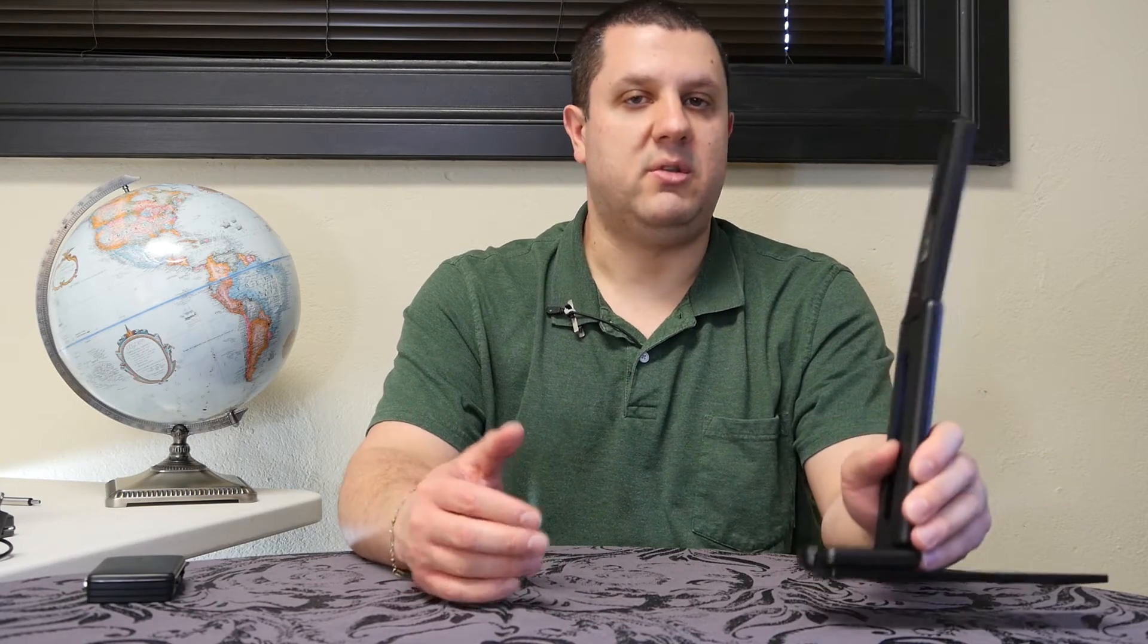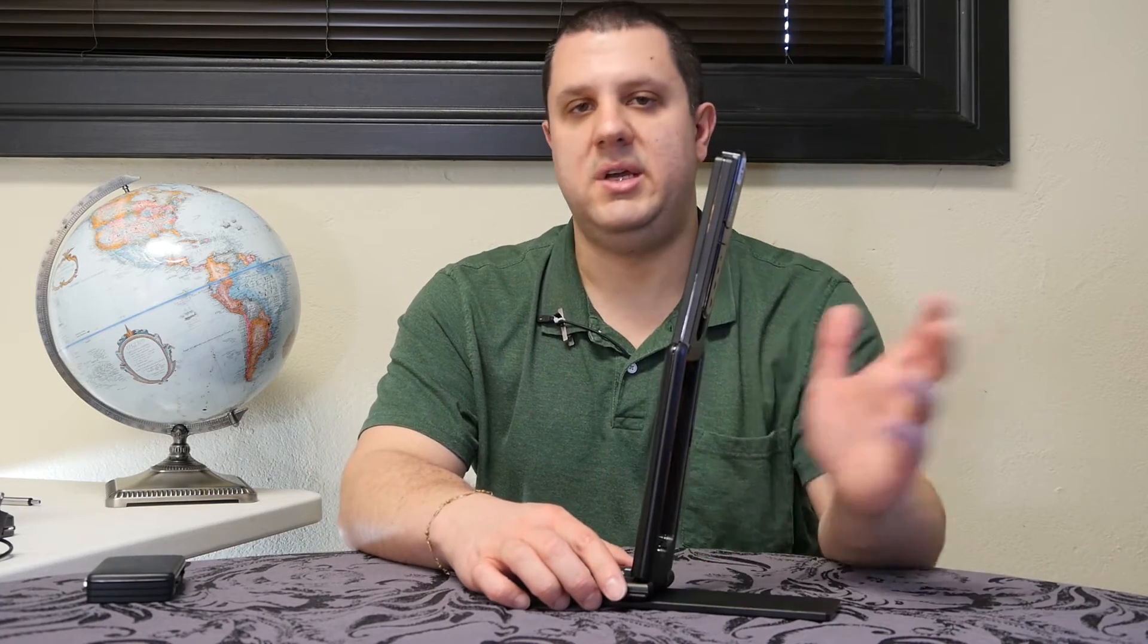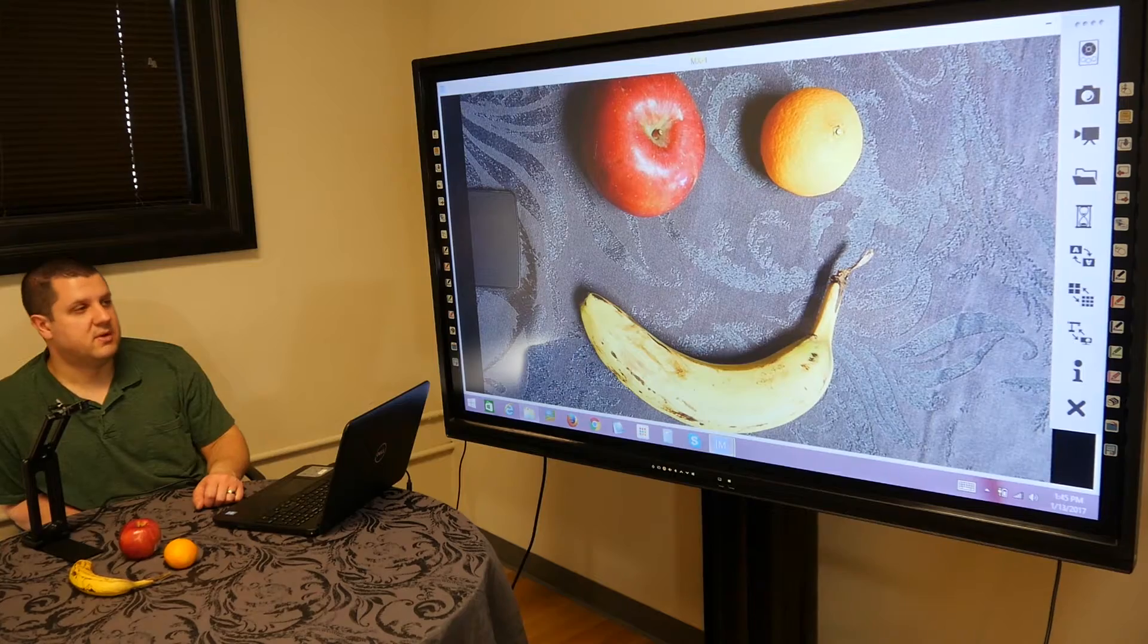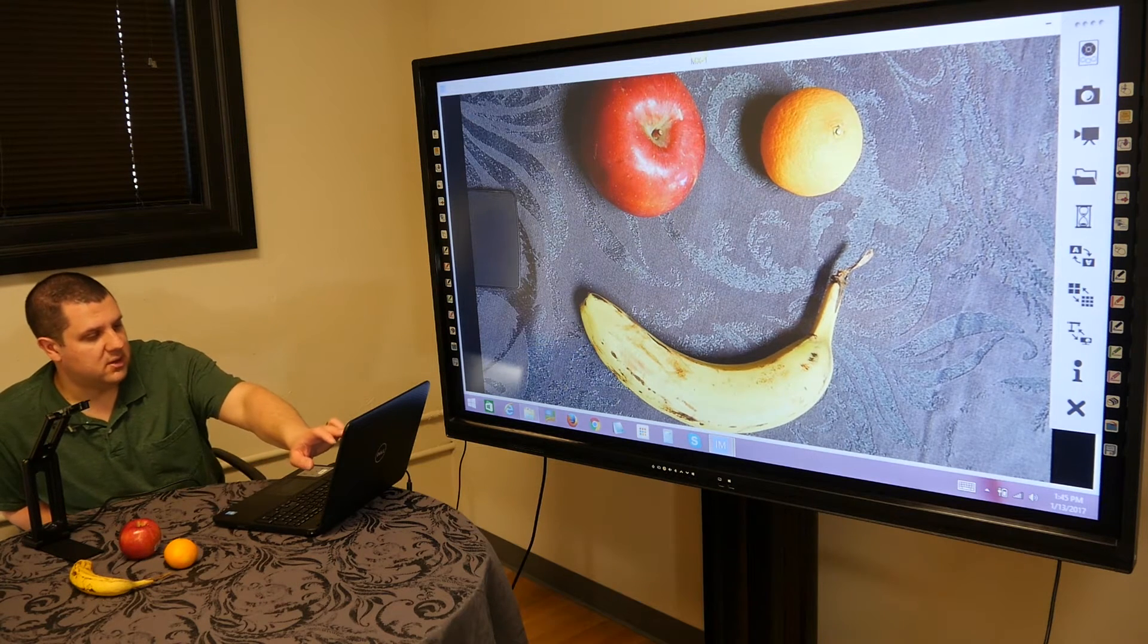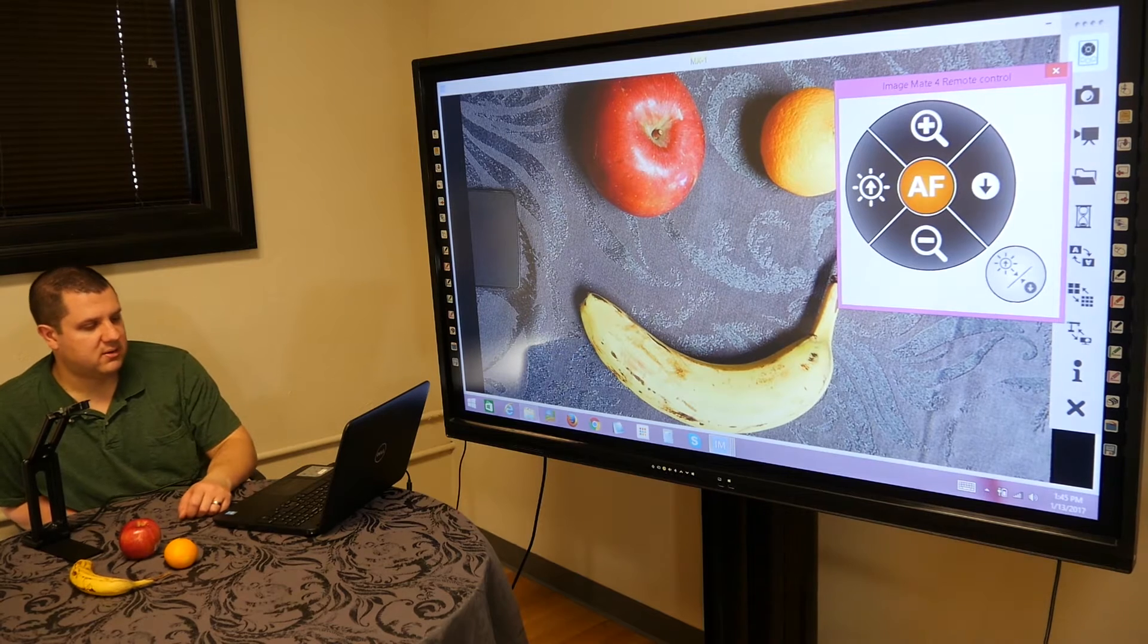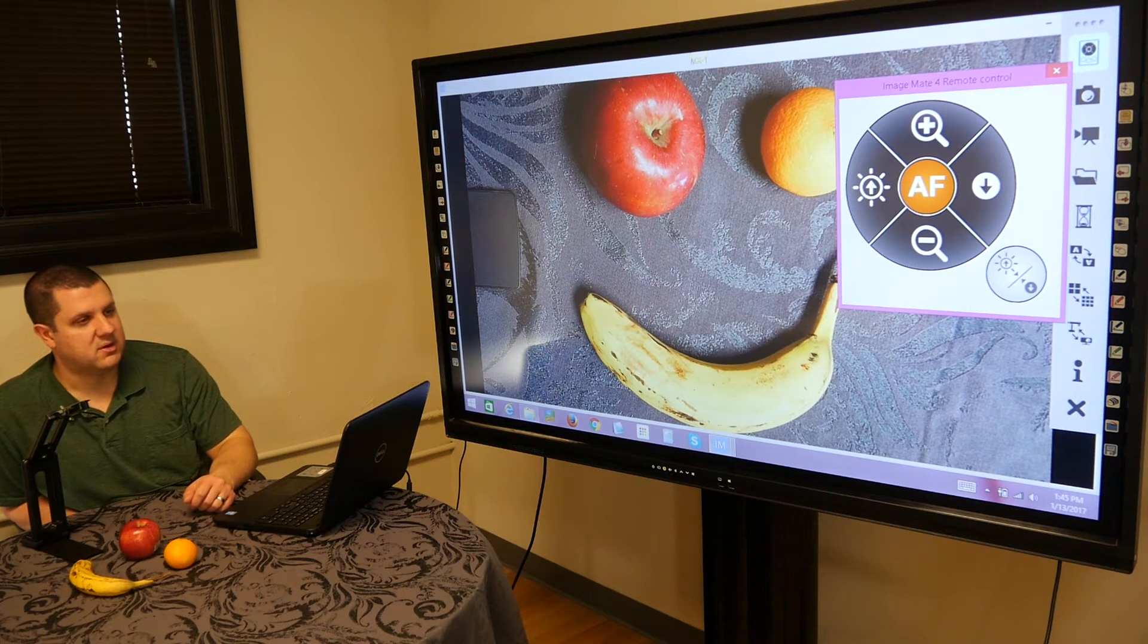Just hook it into your computer using Elmo's Image Mate software. You're going to be able to view it on your computer screen and then send it out to whatever LCD or projector you're using. So you've got your toolbar on the right hand side of the display there, and we can actually open up a remote control panel.